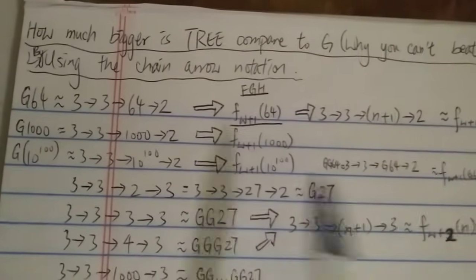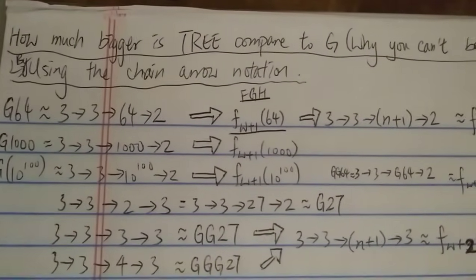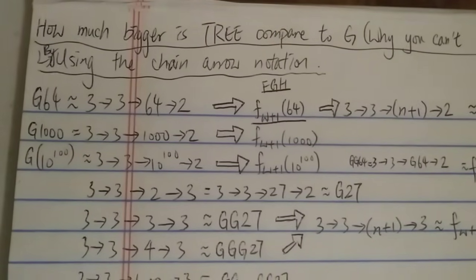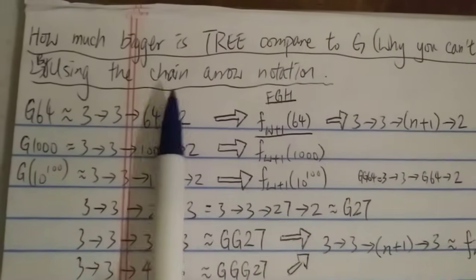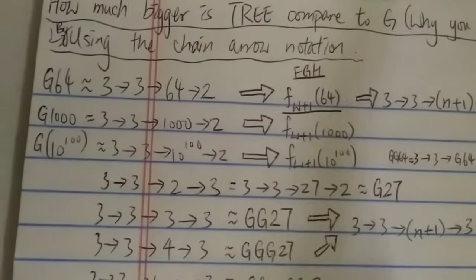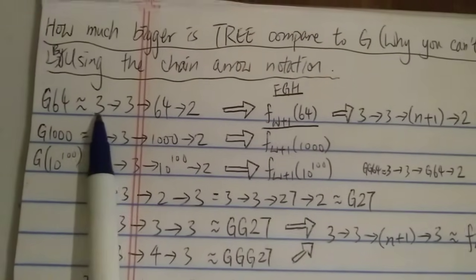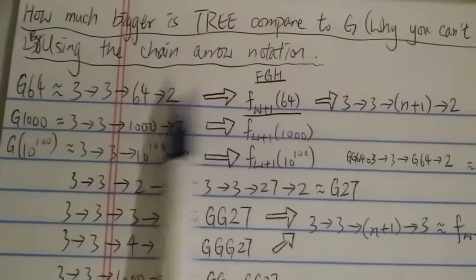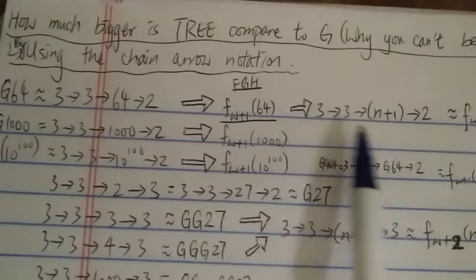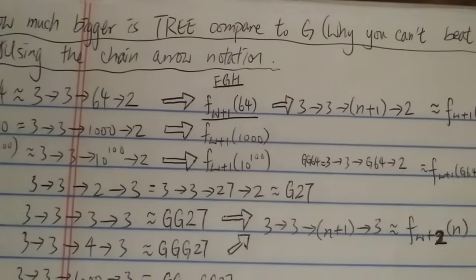Let's get started. In this video I'm going to explain things using the chain arrow notation. Chain arrow notation is another very powerful notation — I have also made a video about that. Just a disclaimer: the chain arrow notation is much much much more powerful than the G function. So first of all, how big is G64, Graham's number? Using the chain arrow notation, Graham's number is around 3→3→64→2. In terms of the fast-growing hierarchy, 3→3→64→2 is around f(ω+1, 64).